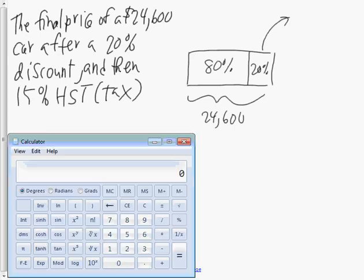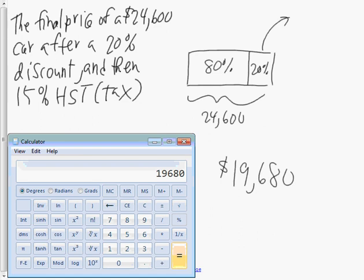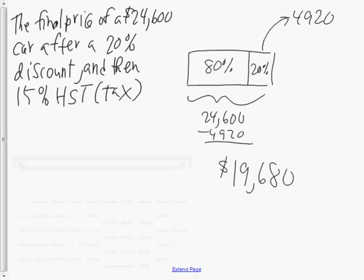If you have a 20% discount, you pay 80%. So if I take 80%, or 0.8, of $24,600 — since 80% of means multiplication — the cost of the car after that discount will be $19,680. You could also have found 20% of $24,600, which is $4,920, and subtracted that from the original price to still get $19,680.